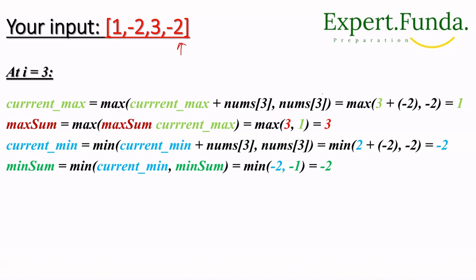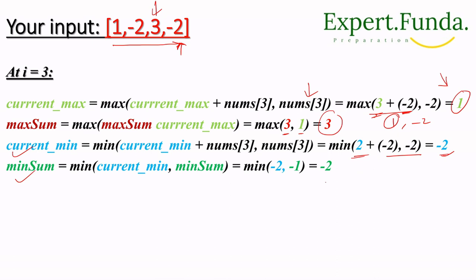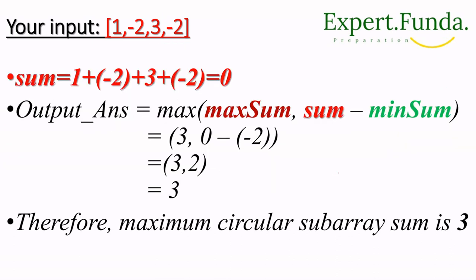At i=3, the element is -2. current_max is 3. max(3 + (-2), -2) = max(1, -2) = 1. So current_max = 1. max_sum = max(3, 1) = 3. Max_sum stays at 3. For current_min, we similarly update. The total array sum — summing all elements [1, -2, 3, -2] — gives us 0.